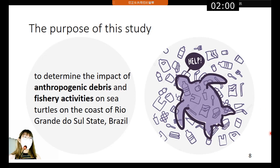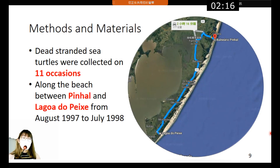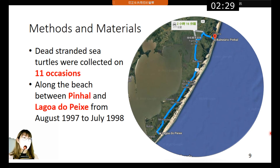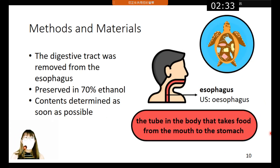The purpose of this study is to determine the impact of anthropogenic debris and fisheries activities on sea turtles on the coast of Rio Grande do Sul state in southern Brazil. The dead stranded sea turtles were collected on 11 occasions between the beaches of Pinheiro and Lagoa do Peixe from August 1997 to July 1998. After collecting the carcasses, the digestive tract was removed from the esophagus and preserved in 70% ethanol, and the gut contents were then determined as soon as possible.